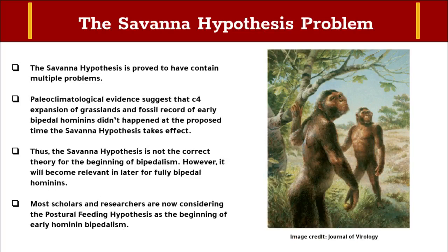As mentioned before, this theory contains some major problems. Paleoclimatological evidence suggests that C4 expansion of grasslands and the fossil record of early bipedal hominins didn't coincide at the proposed time that the Savannah Hypothesis takes effect. Thus, the Savannah Hypothesis is not the correct theory for the origin of bipedalism. However, it will become relevant later for fully bipedal hominins. Most scholars and researchers are now considering the Postural Feeding Hypothesis as the beginning of early hominin bipedalism.